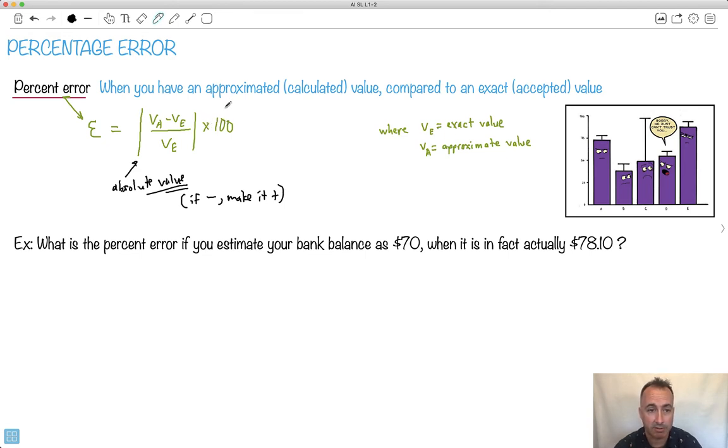So let's take a look and see if we can do this. This is the formula. You don't have to memorize it. You just have to know how to use it. So let's take a look at an example. What is the percent error if you estimate your bank balance to be $70, when it is in fact actually $78.10? That's actually nice, right? You have more money in your account than you thought.